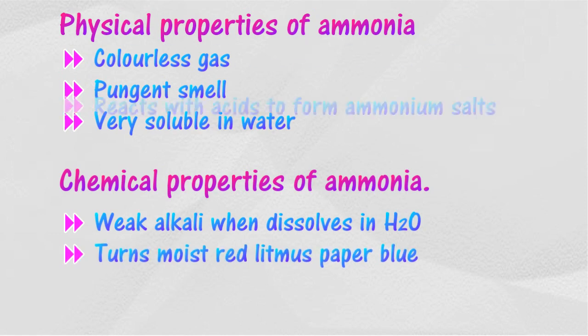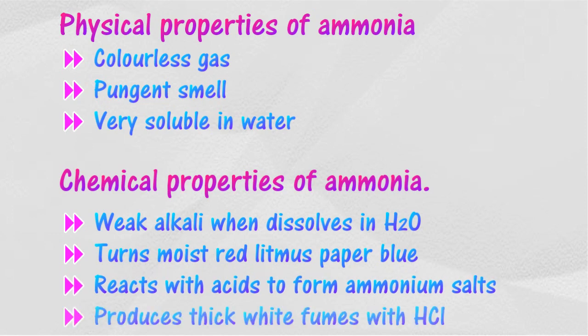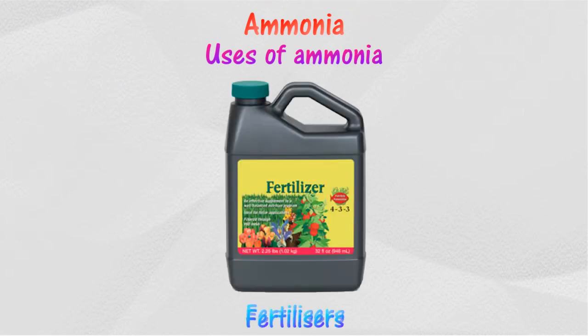Ammonia is an alkali which neutralizes acids to form ammonium salts. Ammonia produces thick white fumes with hydrogen chloride gas. These are key chemical properties that define its reactivity.